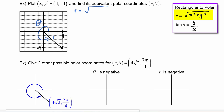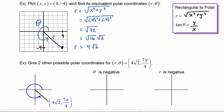r equals the square root of x squared plus y squared, which is the square root of four squared plus negative four squared, which is the square root of 32. Since 32 has a perfect square factor of 16 and an irreducible part of 2, we get r equals four radical two.